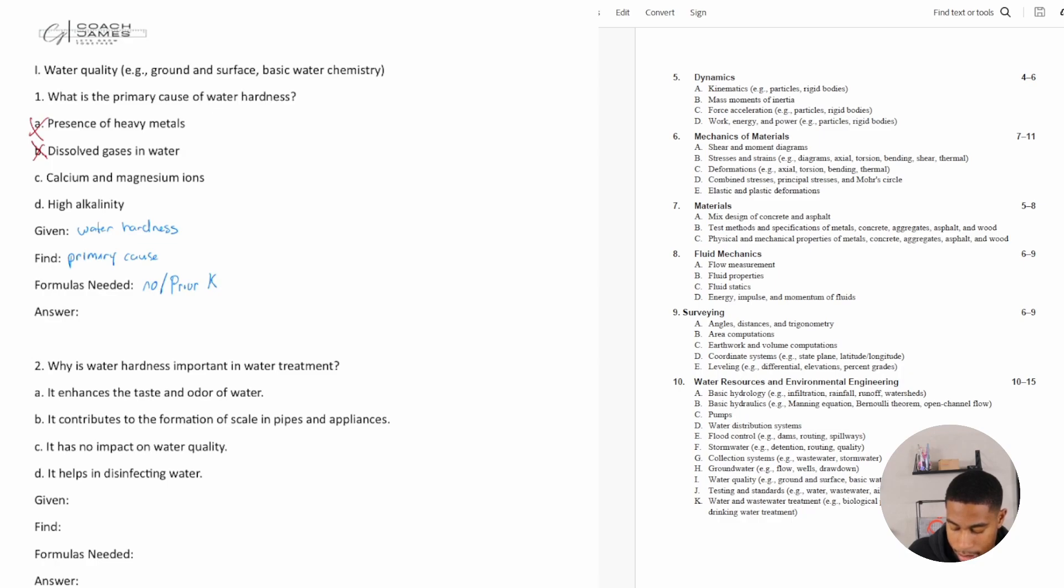Calcium and magnesium ions? Yes. When you think of water hardness, you should know that it's calcium. Remember, calcium makes your bones strong, right? Calcium and milk. It's like hard hardness or high alkalinity. No. Your water hardness is always going to be calcium and magnesium ions.